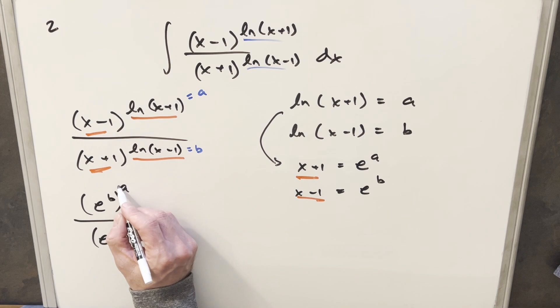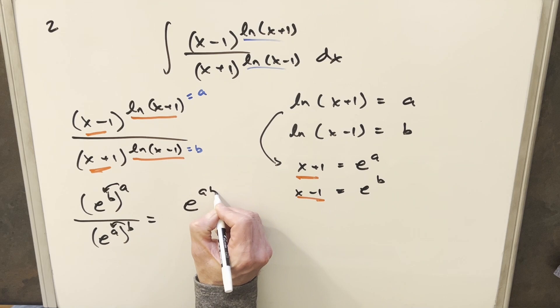But then just with regular exponent properties, I can distribute this inside the parentheses. And I can write this as e to the AB, and this one is e to the AB.